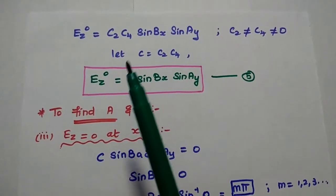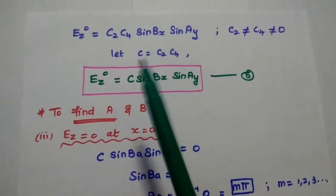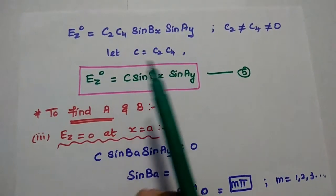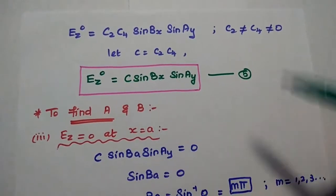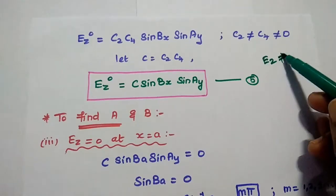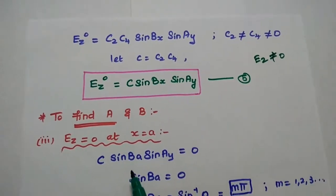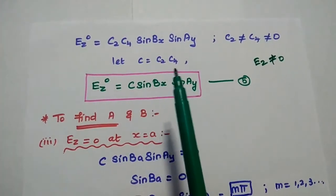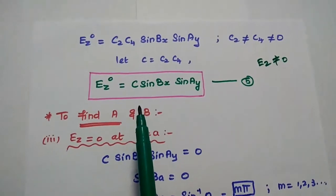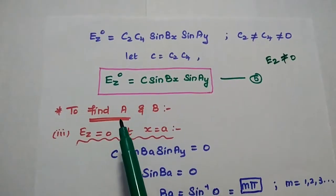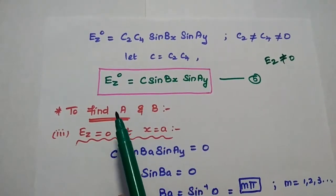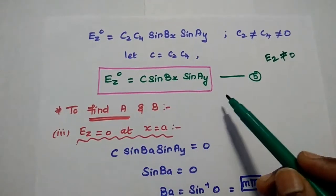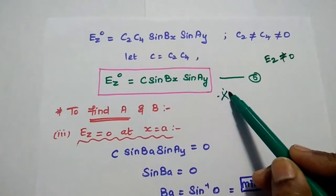Since EZ should not equal 0, we combine the constants c2 and c4 into a single constant C. Then the field component EZ is written as C sin bx sin ay. Consider this the fifth equation.